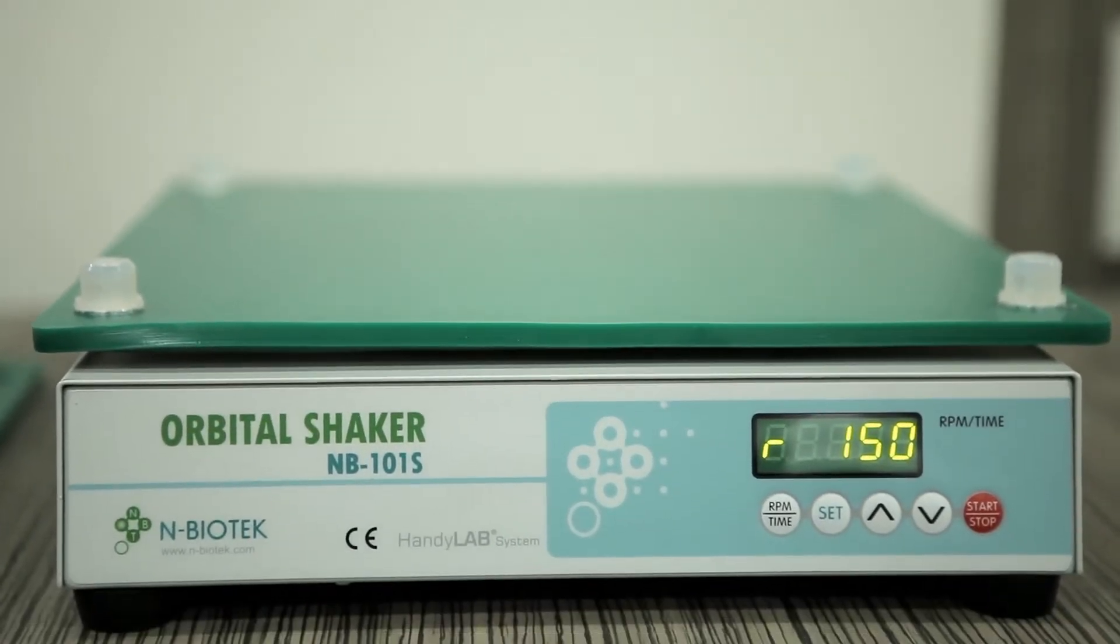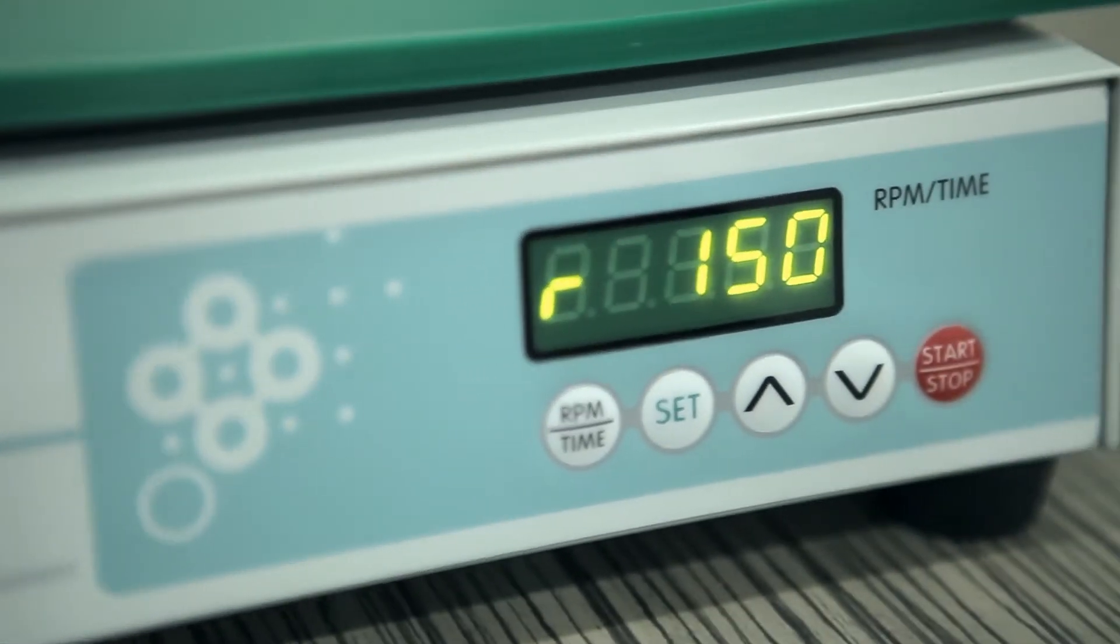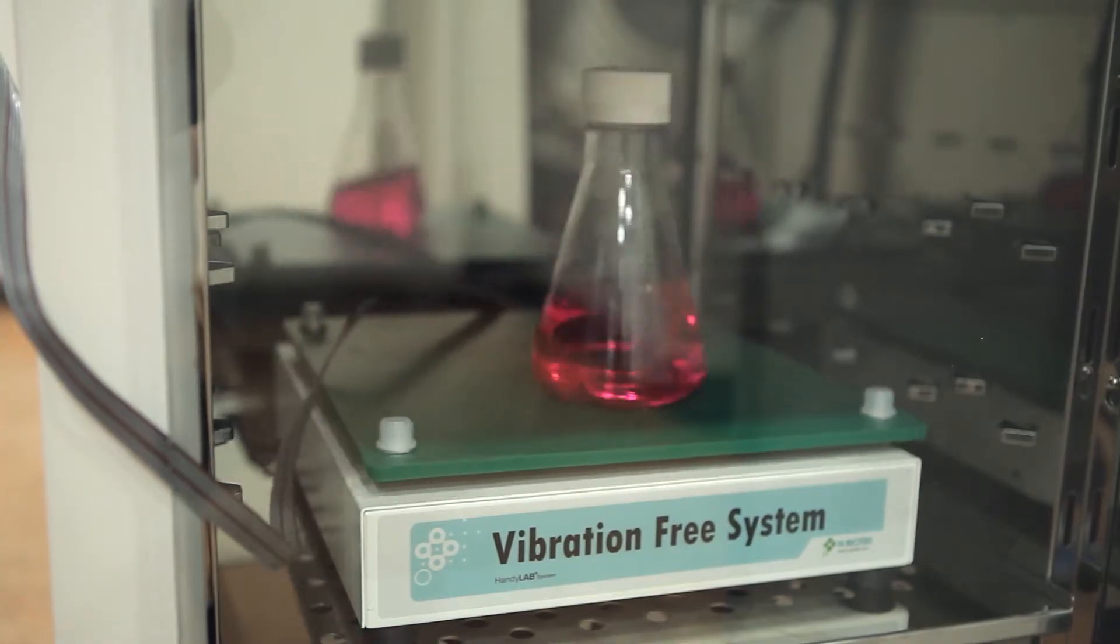NBiotech's Remote Shaker is an optimized product used inside the incubator. It separates the shaker and control box and connects it with a flat cable.